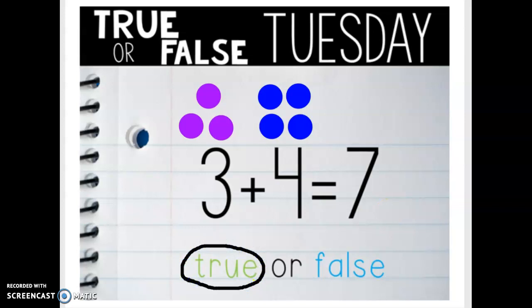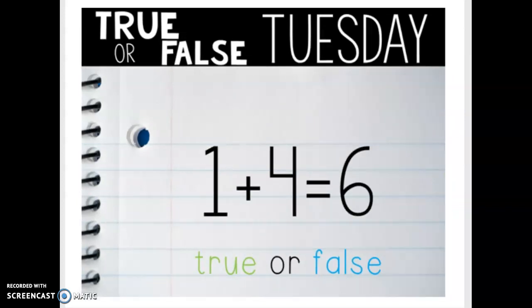All right, let's look at another one. Now I have 1 plus 4 equals 6. Let's see if this is a true statement or a false statement. So first I'm going to represent the number 1 with one dot. Then I have the number 4. I'm going to represent the number 4 with 4 dots. 1, 2, 3, 4.